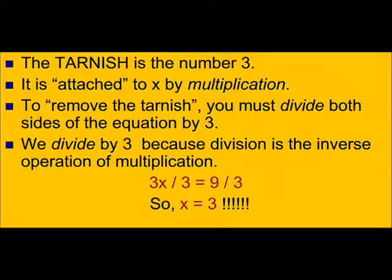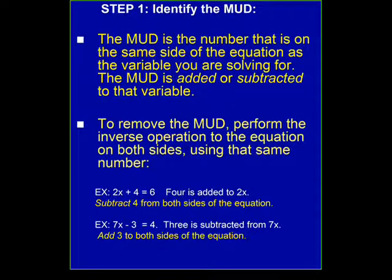When you have a problem like this, you first should identify the mud. It's the number on the same side of the equation as the variable you're solving for. And it's either added or subtracted to the variable. To remove the mud, you perform the inverse operation to the equation on both sides using that same number. In the equation 2x plus 4 equals 6, 4 is added to 2x. So, you subtract 4 from both sides of the equation. In the equation 7x minus 3 equals 4, 3 is subtracted from 7x. So, you add 3 to both sides of the equation to help solve it.